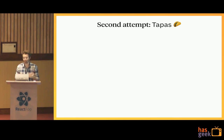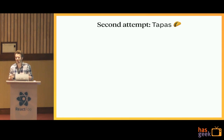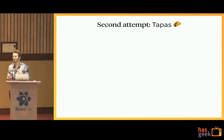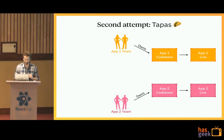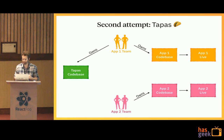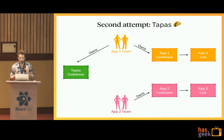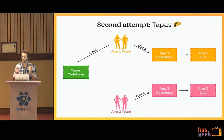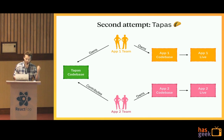After ditching Commando, a second project was called Tapas — named after the dish that's meant to be shared. Same setup at the beginning, but this time one team started to own the project — they were the ones taking care of its architecture and improvement. Other teams were contributing to the project directly.